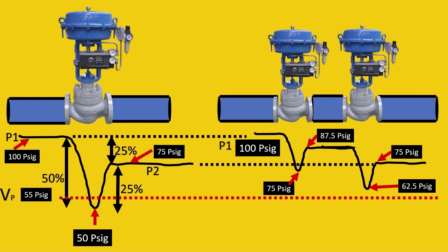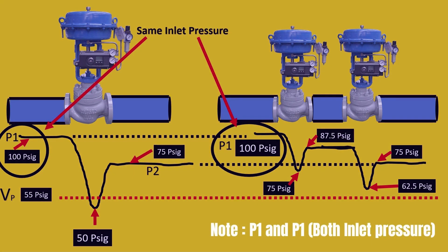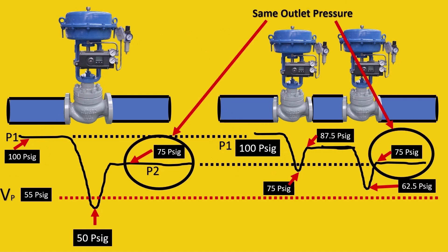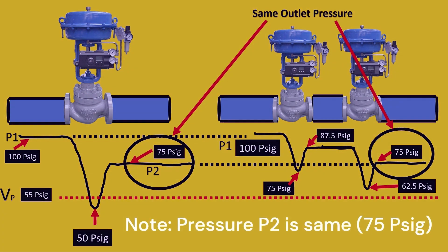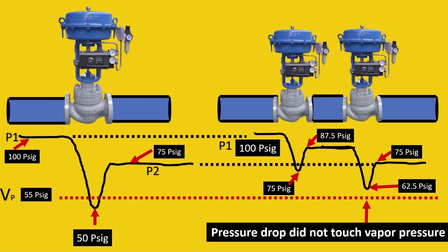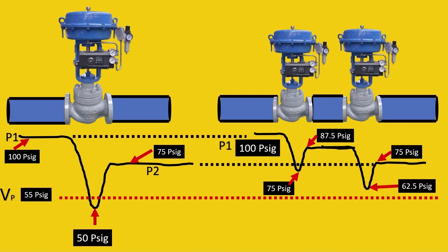The amazing thing starts here. If you notice, the P1 and the P2, the pressure at the inlet is the same, right? 100 psig, 100 psig. The pressure at the outlet is also the same: 75 psig and 75 psig. However, did you notice that the pressure curve in the second case did not touch the vapor pressure? So cavitation did not happen.